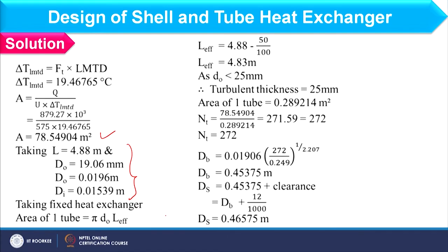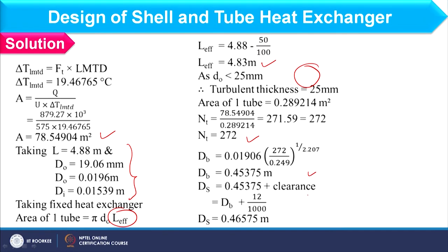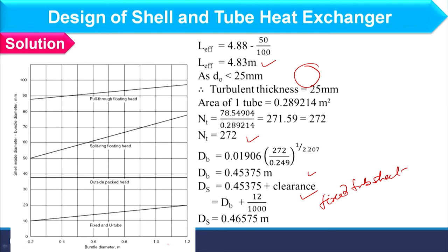Next, we find the bundle diameter. For one tube pass, K1 and N1 values are taken from the table, and based on these values, the bundle diameter comes as 0.45375 m. Since the maximum temperature is 60°C, we should use a fixed tube sheet. Using the clearance graph and adding the clearance to the bundle diameter, we obtain the shell diameter as 0.465 m.